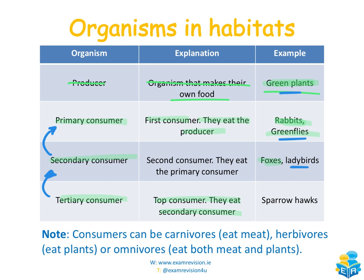A primary consumer that only eats plants is a herbivore. A secondary consumer could be a carnivore, meaning it only eats meat, or an omnivore, meaning it eats both meat and plants. So the consumers at each level can fall into these different dietary categories depending on what they eat within the food chain.